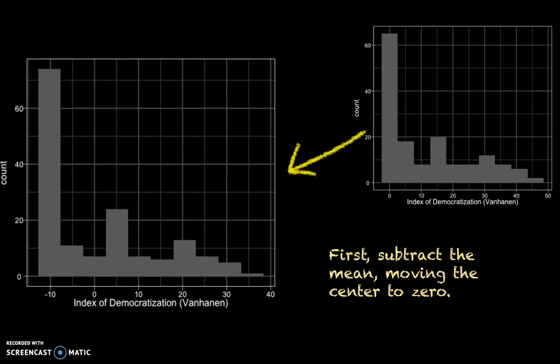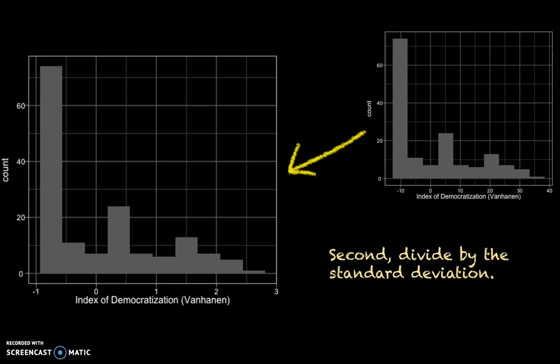The second step is to divide by the standard deviation. After dividing, the x-axis has changed from a range of minus 10 to about 40, to a range of minus 1 to about 3. This means we have changed the unit of measurement of the variable. Now the numbers minus 1, 0, 1, 2, and 3 reflect the number of standard deviations a particular country is away from the mean. A score of 0 means exactly at the mean; a score of 1 means one standard deviation more democratic than the average country; minus 1 means one standard deviation less democratic.